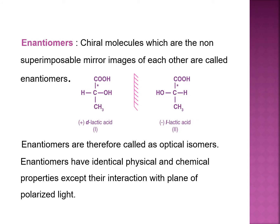Now, enantiomers and diastereomers. Chiral molecules that are non-superimposable mirror images of each other are called enantiomers. Lactic acid exists in two isomeric forms: the D-form and the L-form. The D-form is dextrorotatory, rotating the plane of polarized light clockwise, and the L-form is levorotatory, rotating it anti-clockwise. Enantiomers are therefore called optical isomers. Enantiomers have identical physical and chemical properties except for their interaction with the plane of polarized light.